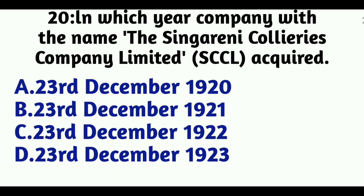Question 20: In which year was the company known as The Singareni Collieries Company Limited (SCCL) acquired? Option A: 23 December 1920, Option B: 23 December 1921, Option C: 23 December 1922, Option D: 23 December 1923. The answer is Option C, 23 December 1922.